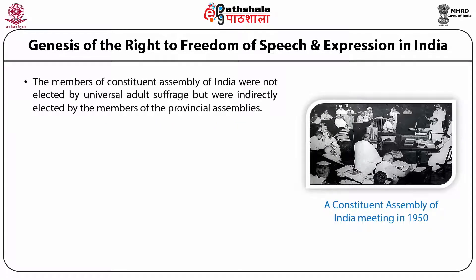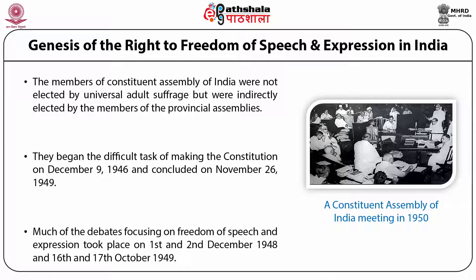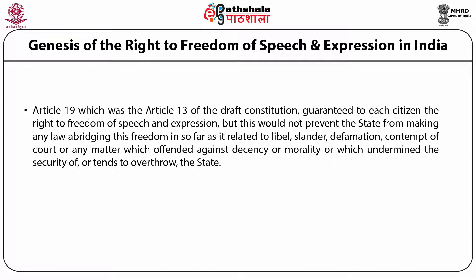The members of the assembly were not elected by universal adult suffrage, but were indirectly elected by provincial assemblies. They began the difficult task of making the Constitution on December 9, 1946, and concluded on November 26, 1949 — a long and arduous process. Much of the debates focusing on free speech and expression took place on the 1st and 2nd of December 1948 and the 16th and 17th of October 1949. Article 19 of the present Constitution was Article 13 of the then draft Constitution. Article 13 guaranteed to each citizen the right to free speech and expression, but would not prevent the state from making any law abridging this freedom in so far as it related to libel, slander, defamation, contempt of court, or any matter which offended against decency or morality or which undermined the security of or tended to overthrow the state.